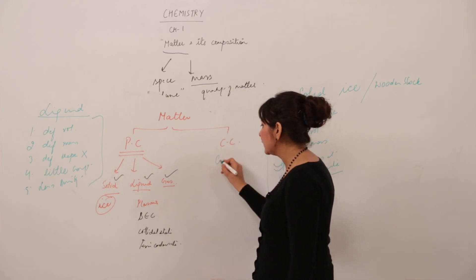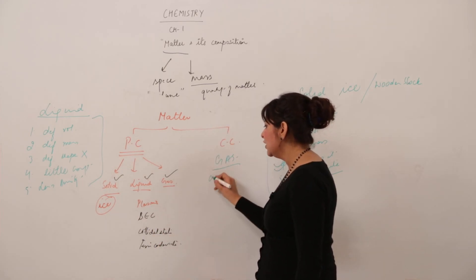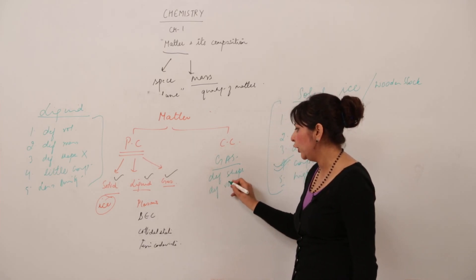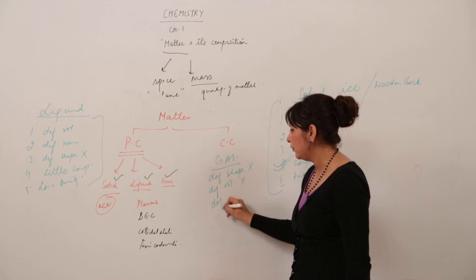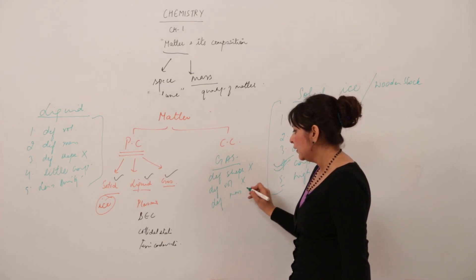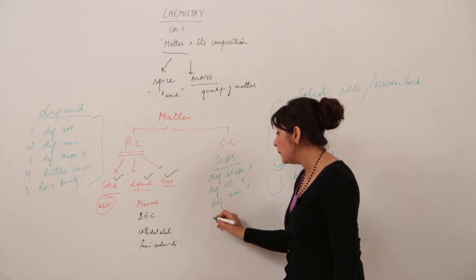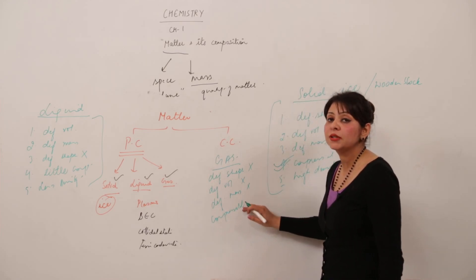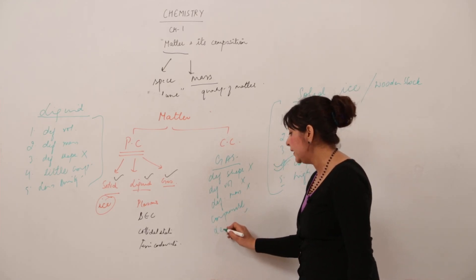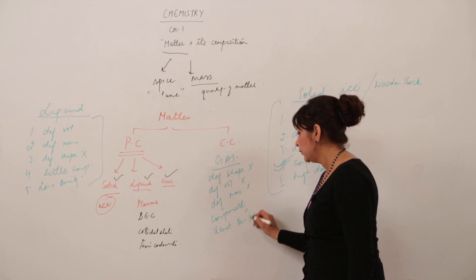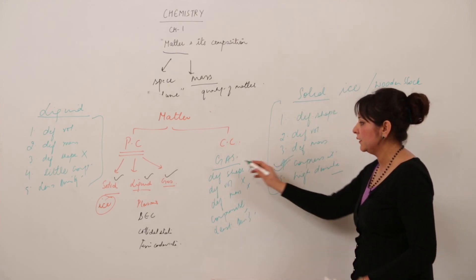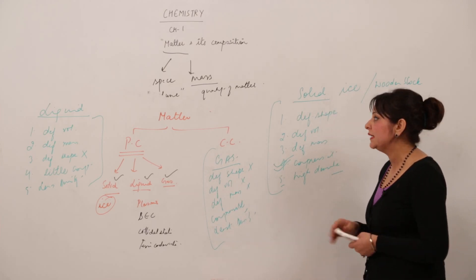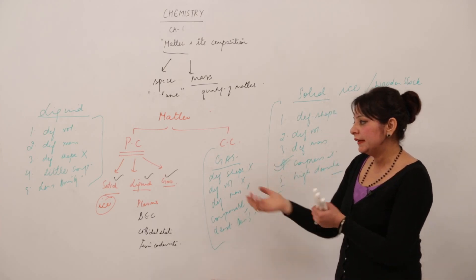Gas does not have definite shape, definite volume, or definite mass. But it is much more compressible than solid or liquid, and its density is the least of all three. These are the factors that govern the existence of a substance as solid, liquid, or gas.